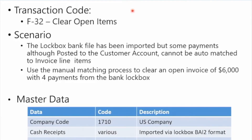Recapping from the previous lesson: we imported the lockbox file, got it posted to initially unapplied AR, then got the amounts posted and applied to customer number 171001. Although the payments are posted and on account with the customer, they weren't actually matching any invoices. So here we're going to use the manual matching process — F-32 — which you learned about in an earlier lesson. The file's been imported and payments cannot be auto-matched, so we'll find a single open invoice for six thousand dollars and match it with four separate check payments from the lockbox.